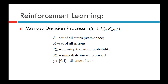An MDP or Markov decision process is a tuple defined by (S, A, P(s'|s,a), R(s,a,s'), γ), where S is the set of all states or state space, A is the set of all actions an agent can take in any state, P(s'|s,a) is the one-step transition probability of making a transition to state s' when the agent takes action a in state s, R(s,a,s') is the immediate one-step reward received by the agent, and γ is the discount factor ranging between 0 and 1.